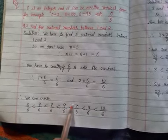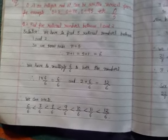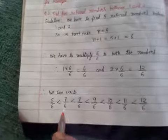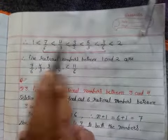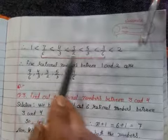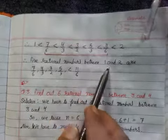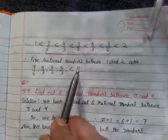We write all the numerators in ascending order because all the denominators are the same. Now we cancel the fractions that can be simplified. 6/6 cancels to 1; 8/6 simplifies to 4/3; 9/6 simplifies to 3/2; 10/6 simplifies to 5/3. So the 5 rational numbers between 1 and 2 are: 7/6, 4/3, 3/2, 5/3, and 11/6.